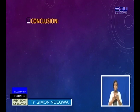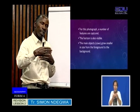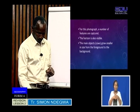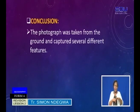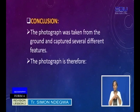Now that we have that information — the horizon is visible, and the main items, the cows, become smaller and smaller as you move away from the camera — we can comfortably come up with the conclusion. The photograph was taken from the ground and captured several different features. The background and the horizon are visible, so it is important for you to have an idea of what kind of photograph we are talking about.